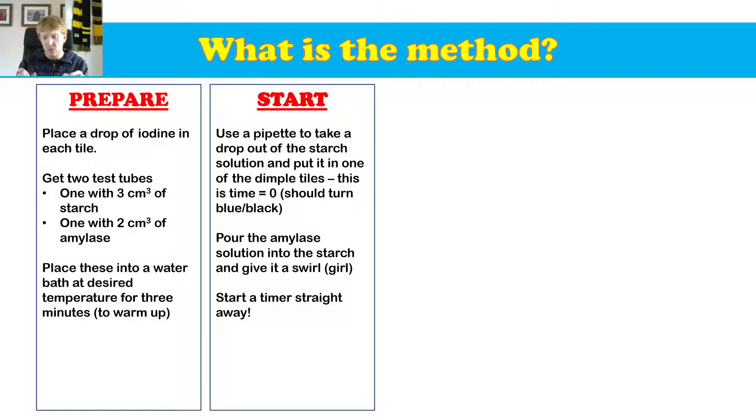We're then going to take those two solutions, we're going to pour the amylase into the starch solution and give it a swirl. Because that's going to start the amylase breaking down the starch. Once we've mixed those two together, we start a timer straight away.